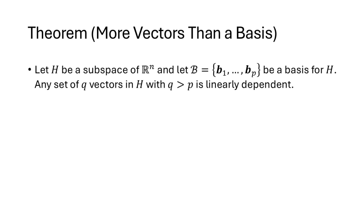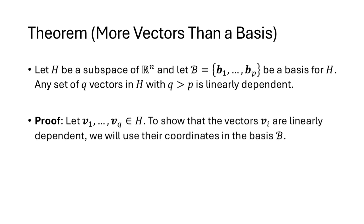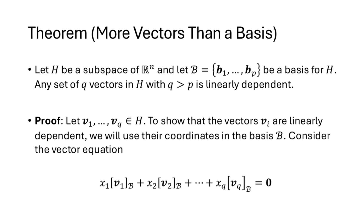Here's the theorem. Let H be a subspace of Rn, and let script B be the set containing vectors B1 through Bp, and let that be a basis for H. We claim that any set of Q vectors in H with Q greater than P is linearly dependent. So let V1 through Vq be vectors from H. We want to show that these vectors are linearly dependent, and we're going to use the coordinates of these vectors in the basis B, which we learned about in the previous lecture. Consider the vector equation x1 times the coordinate vector of V1 in basis B, plus x2 times the coordinate vector of V2, and so on through xq times the coordinate vector of Vq, set equal to the zero vector.